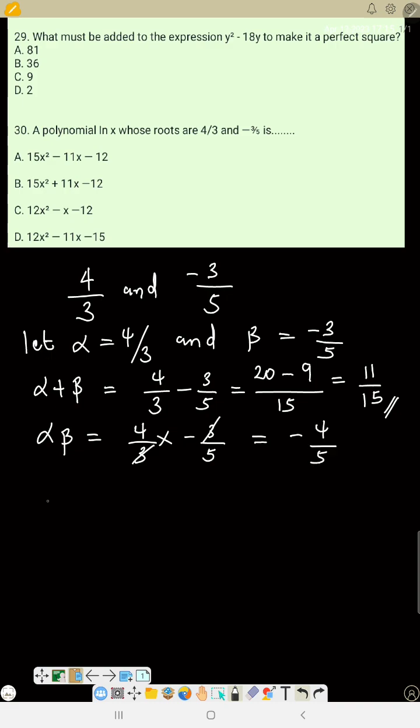The general formula is x squared minus alpha plus beta times x plus alpha beta equals 0. So we have x squared minus 11 over 15 times x plus minus 4 over 5 equals 0. The LCM of 1, 15, and 5 is 15.